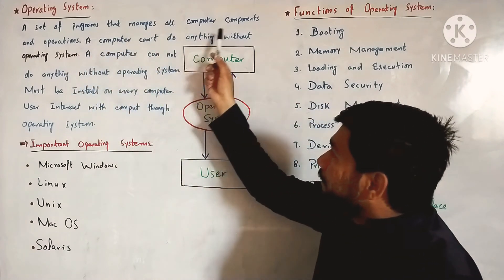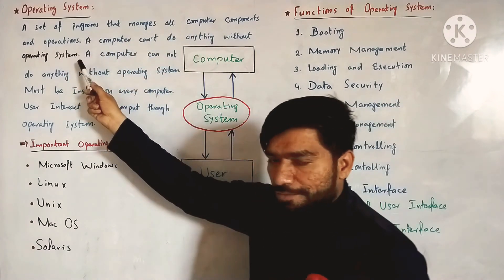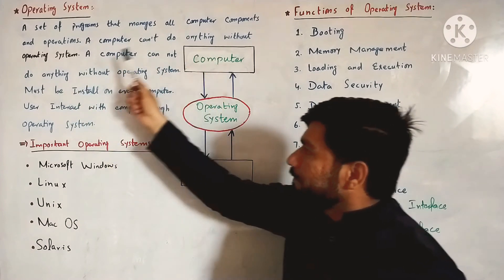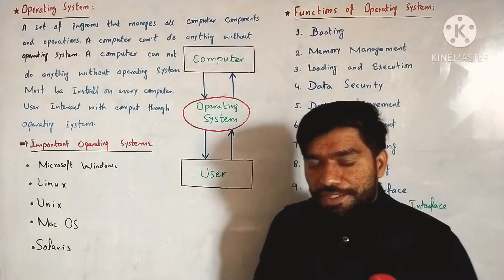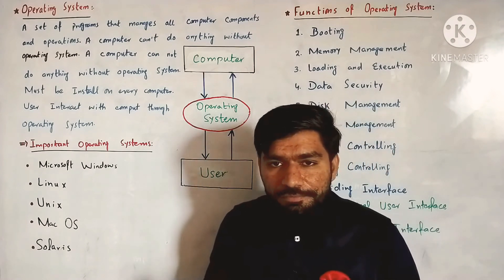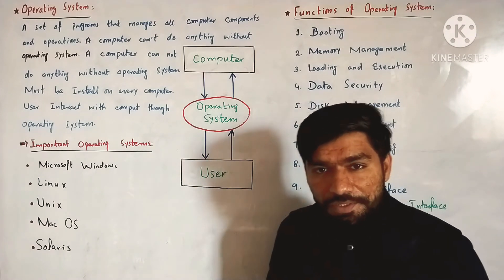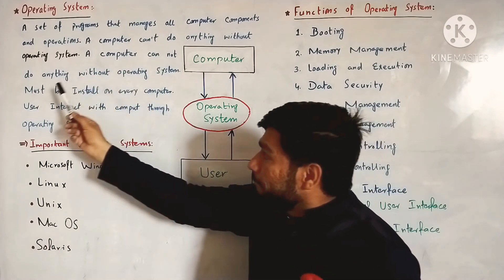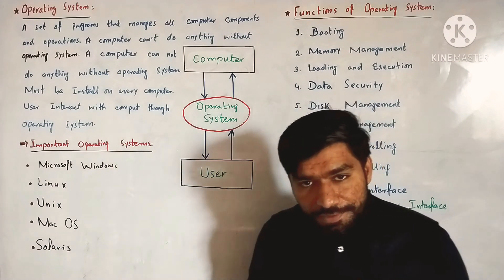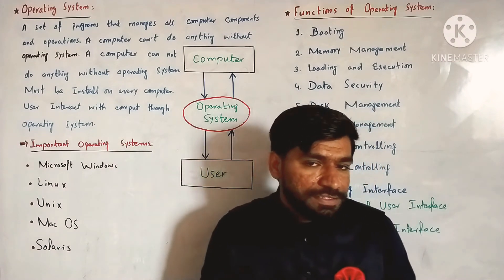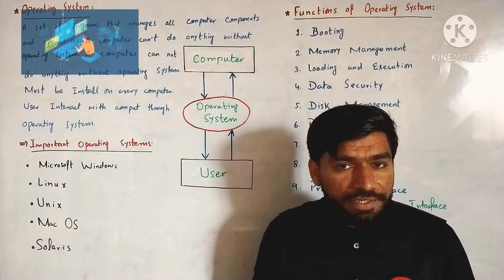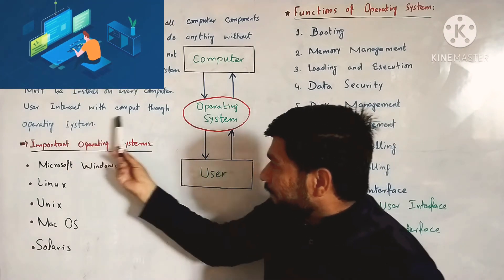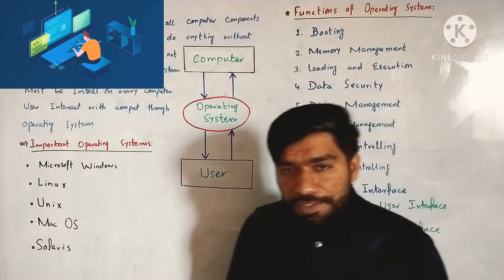A set of programs that balances all computer components and operations is called an operating system. A computer cannot do anything without an operating system — it must be installed. The user interacts with the computer through the operating system.